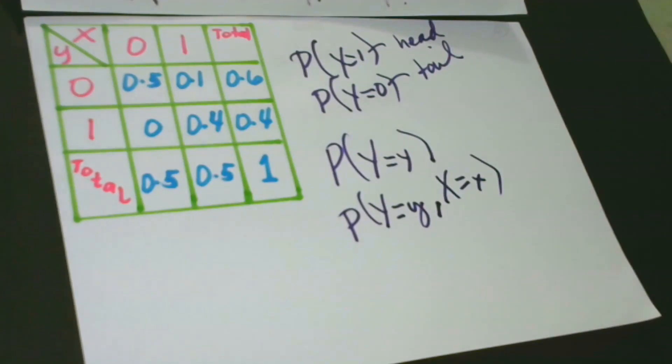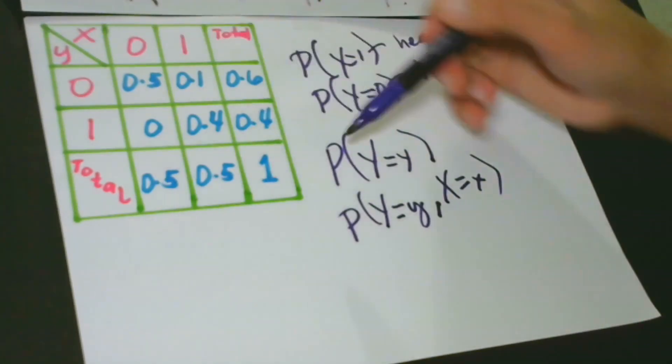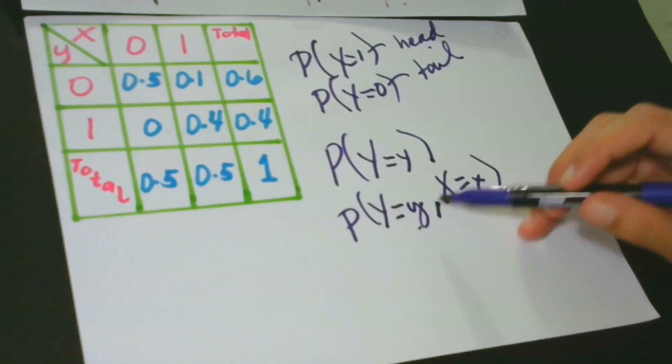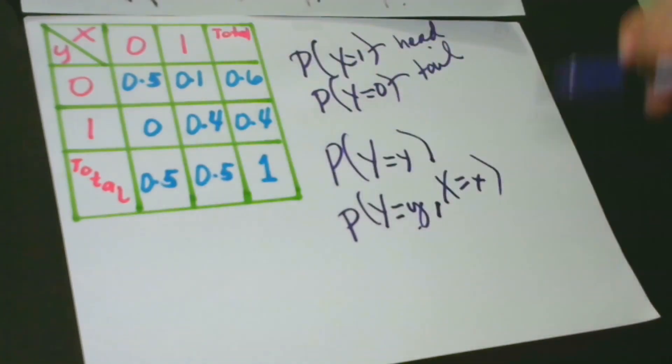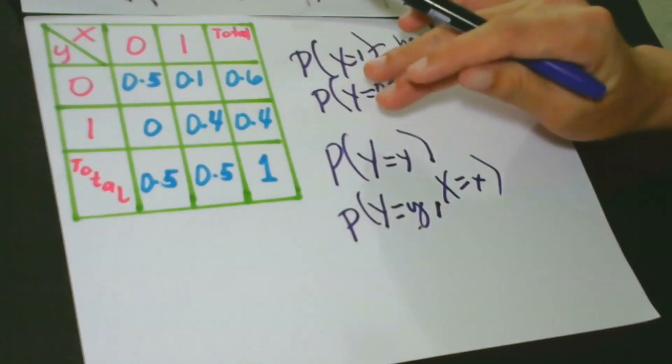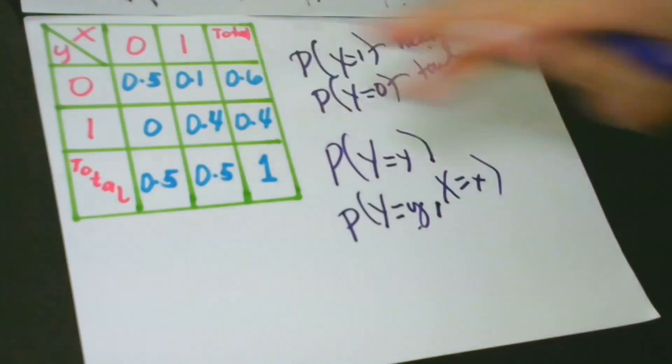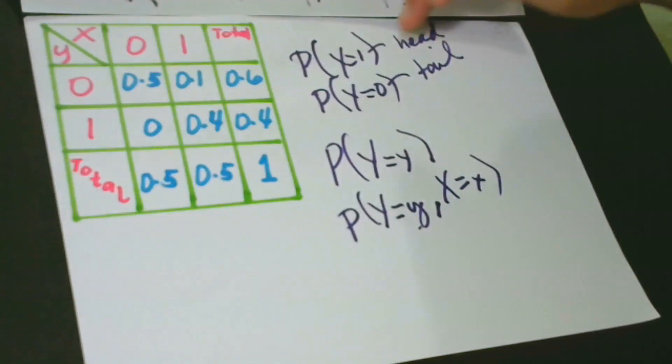In this case, we are considering the values of Y based on the outcomes of X. But then again, we are focusing here on Y and we are not considering the values of X, but we are just considering the values of Y. I think I'm making myself clear.